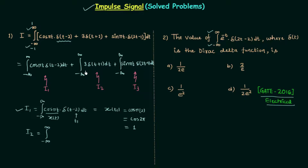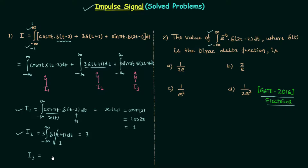Now solving I2: the integral from minus infinity to infinity of 3δ(t+1) dt. We already know the integration of a unit impulse signal is equal to 1, so this integration equals 1, and with the weight of 3, the value of I2 is 3.